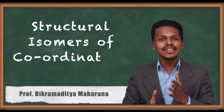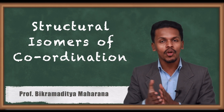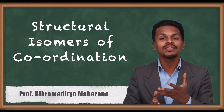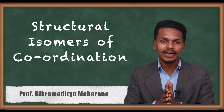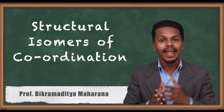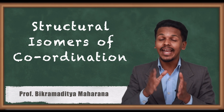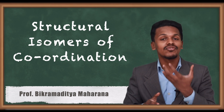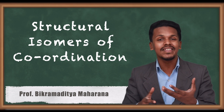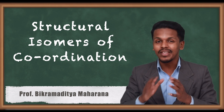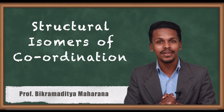Hello friends. In the previous topic we discussed isomerism in coordination compounds. There are basically two main types of classification of isomerism: structural isomerism and stereoisomerism. We have already understood structural isomerisms, which are further classified into more types. So let us understand what are the structural isomers of the complex.